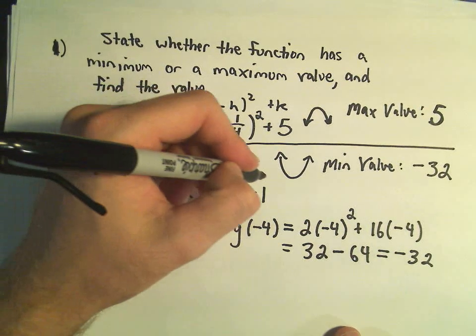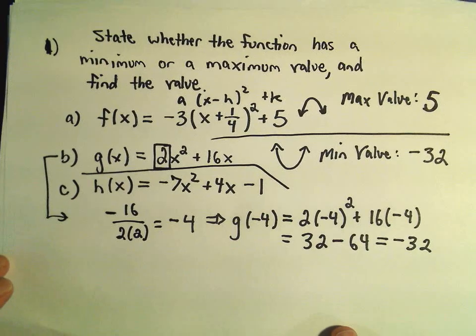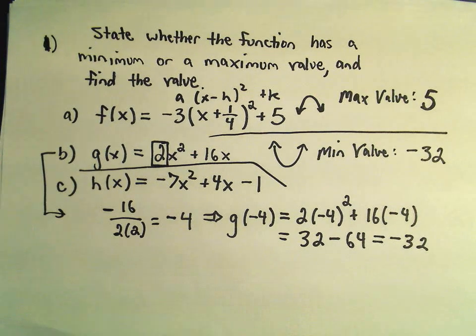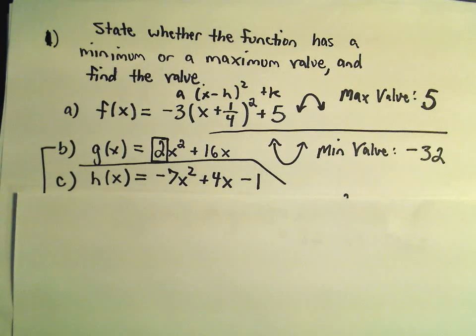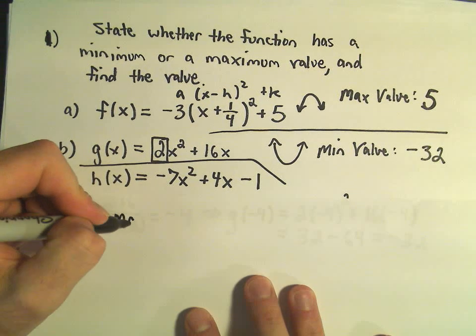Okay, so one more here, we've got negative 7x squared plus 4x minus 1. Okay, so for this one, I know that that's going to have a maximum value.